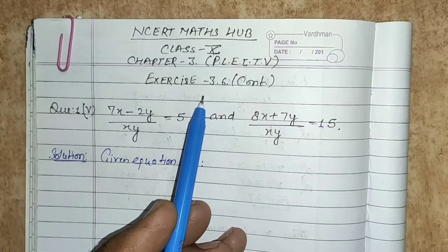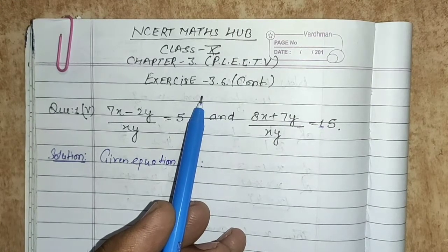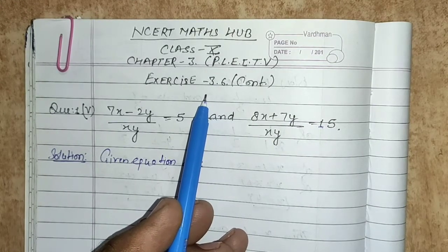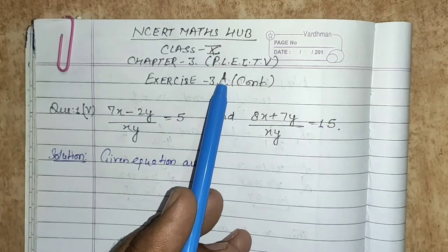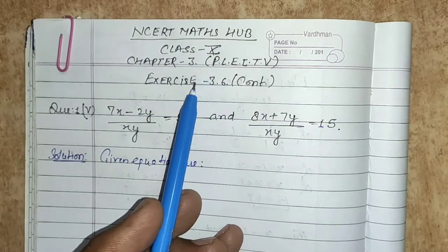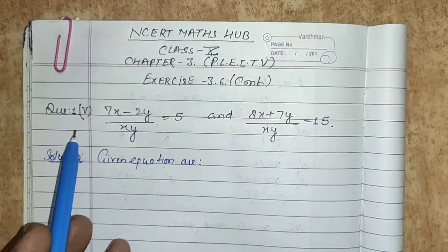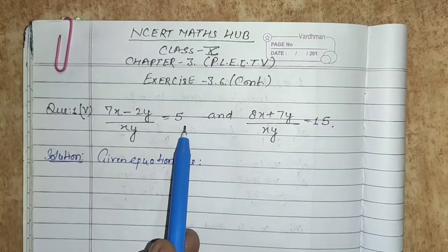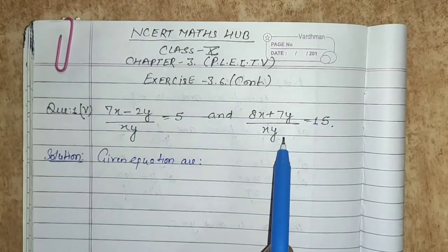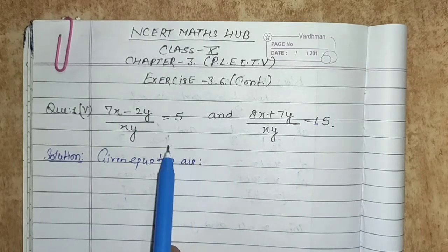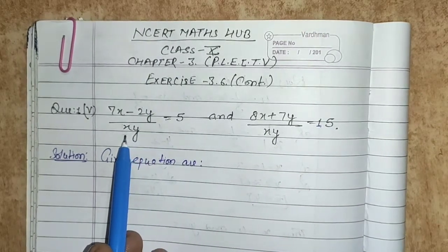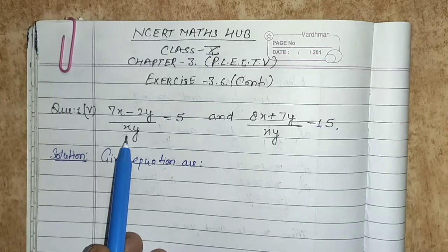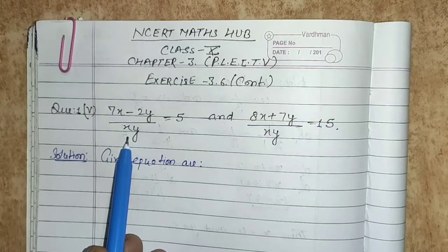Hello everyone, welcome to my YouTube channel NCRT Math Sub. Today in this video we will continue Exercise 3.6, Chapter 3 - Pair of Linear Equations in Two Variables, Class 10. Let's begin with part number 5, question number 1. We have to transform the given equations into a pair of linear equations, find those variables, and then find x and y.